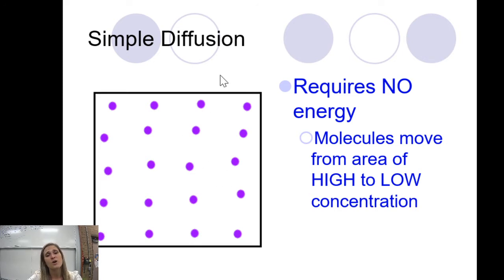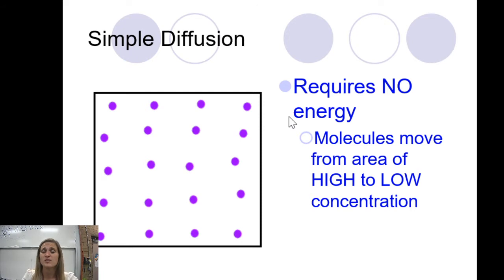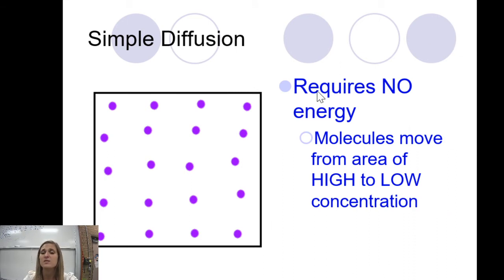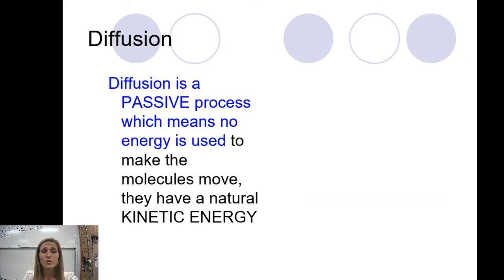That is what we call passive transport. Simple diffusion is an example of passive transport — it doesn't require any energy. If it requires no energy, it's passive transport. Passive transport always moves from an area of high concentration to low concentration. In diffusion, molecules move from where they're packed together to an area of low concentration. Diffusion is a passive process — no energy is used to make the molecules move.